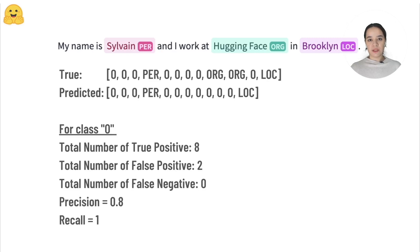We calculate true positive, true negative, and false positives to calculate precision and recall, and take their harmonic mean to get the F1 score. Then we calculate it for every class and take their overall average to evaluate our model.